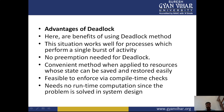Deadlock prevention: deadlock happens only when all four conditions — mutual exclusion, hold and wait, no preemption, and circular wait — hold simultaneously. If it is possible to violate even one of the four conditions at any time, deadlock can never occur in the system. The idea is simple: we have to negate one of the four conditions, though physical implementation can be complex.